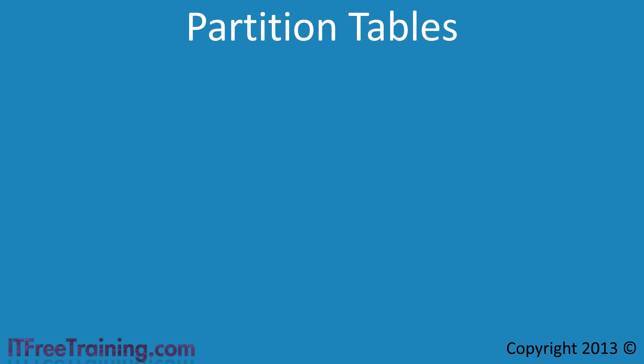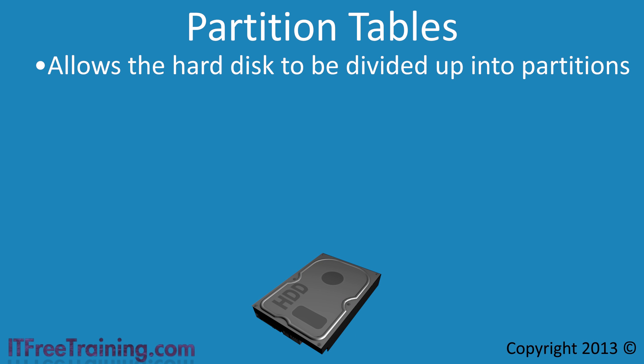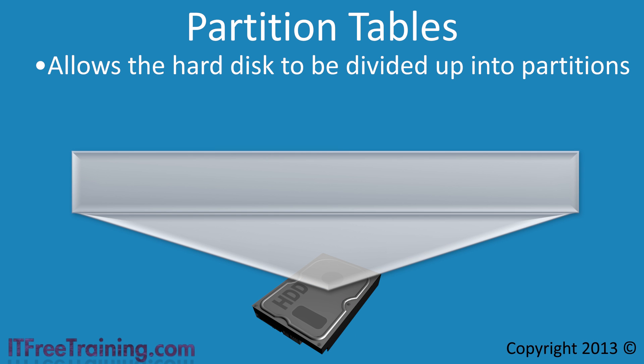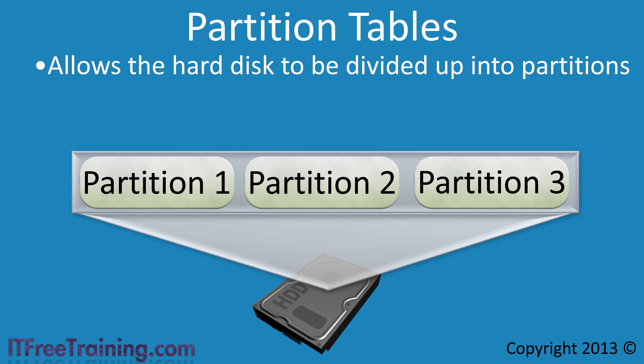Before a hard disk can be used, it needs to have a partition scheme configured on it. The partition scheme allows the hard disk to be divided up into partitions. Let's take a typical hard disk like the one shown. The hard disk contains space that can be used for data, and before this space can be used, it needs to be divided up into partitions.